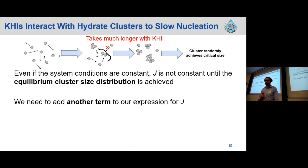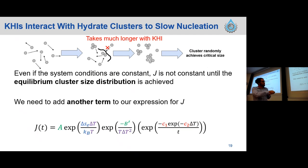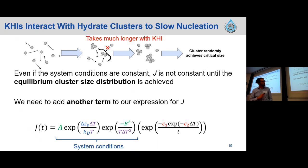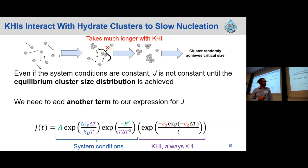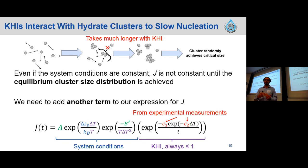This means we need to add another term to our expression for the nucleation rate to characterize this process. We end up with our original CNT equation on the left-hand side, which tells us how J changes because system conditions are changing, plus a second term expressing how the KHI changes the nucleation rate. This term is always less than or equal to one, so it always slows the nucleation rate. We can get the constants C1 and C2 from experimental measurements, though we haven't done this rigorously yet and don't yet know if these constants change with system size.